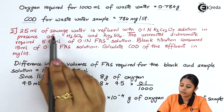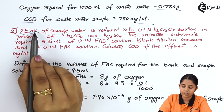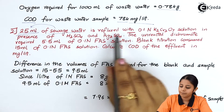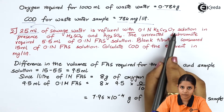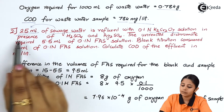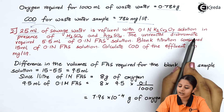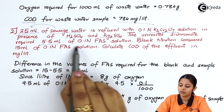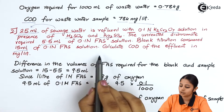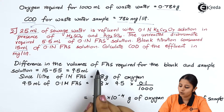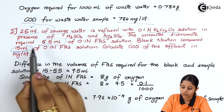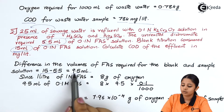The second question: 25 ml of sewage water is refluxed with 0.1 normal K2Cr2O7 in presence of H2SO4 and Ag2SO4. The unreacted dichromate required 5.5 ml of 0.1 normal FAS solution. The blank titration consumed 15 ml of 0.1 normal FAS solution. The difference is 15 minus 5.5, which gives 9.5 ml.